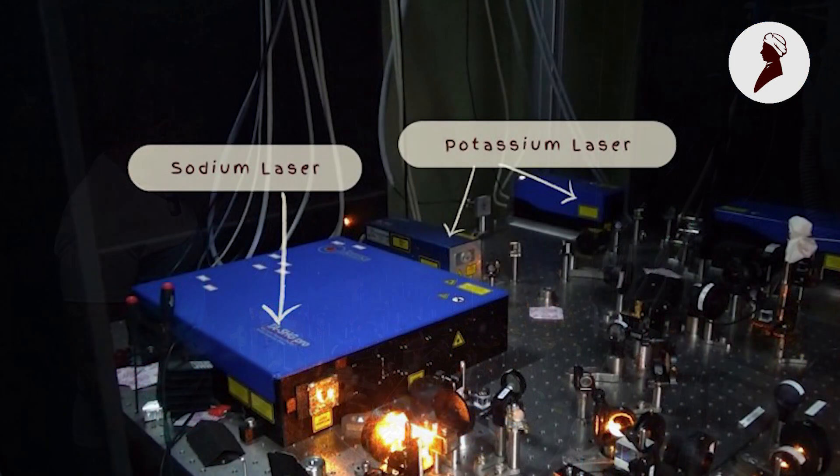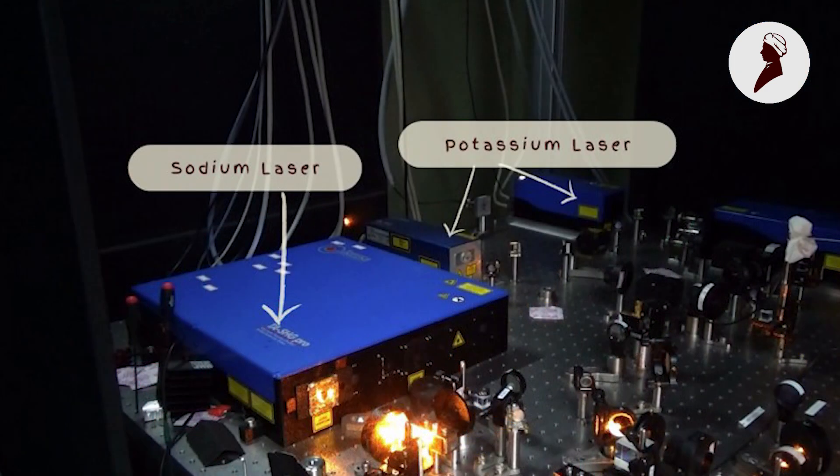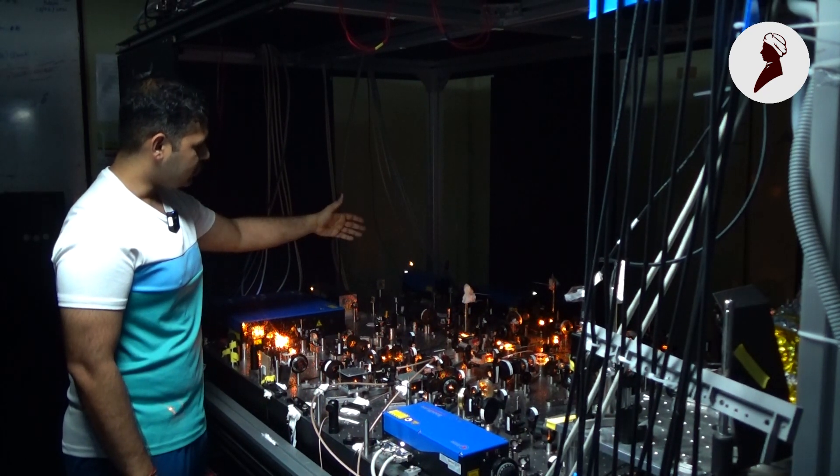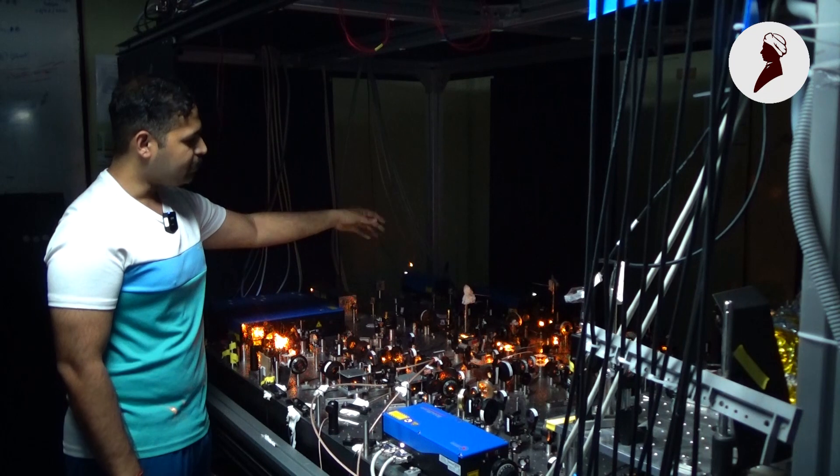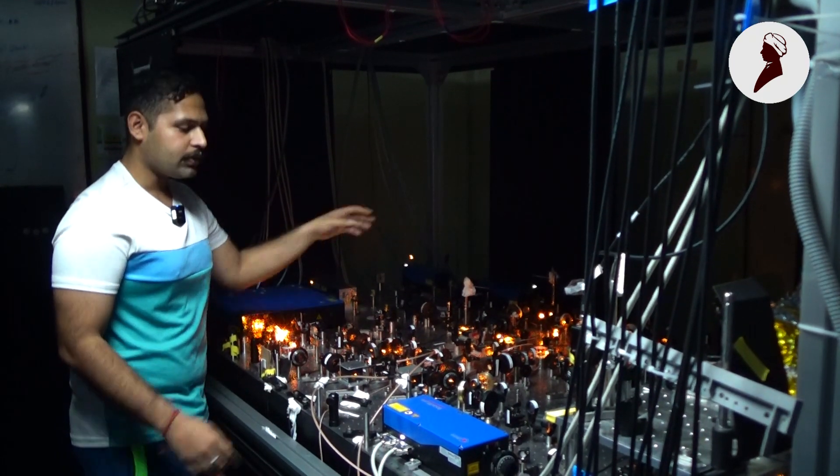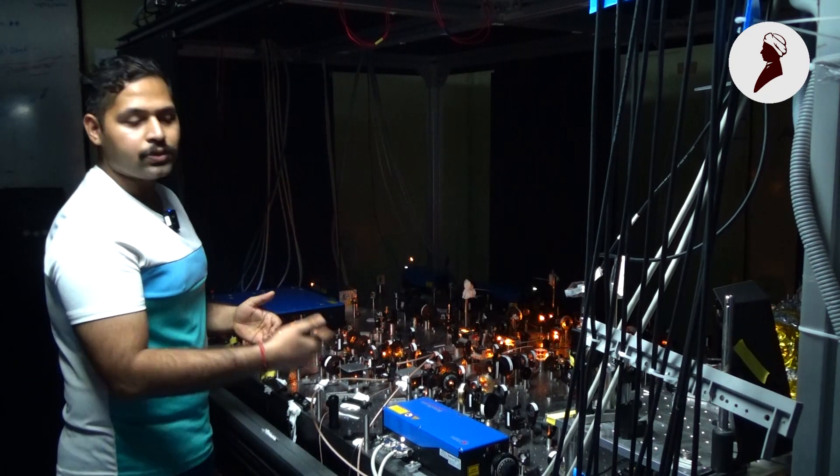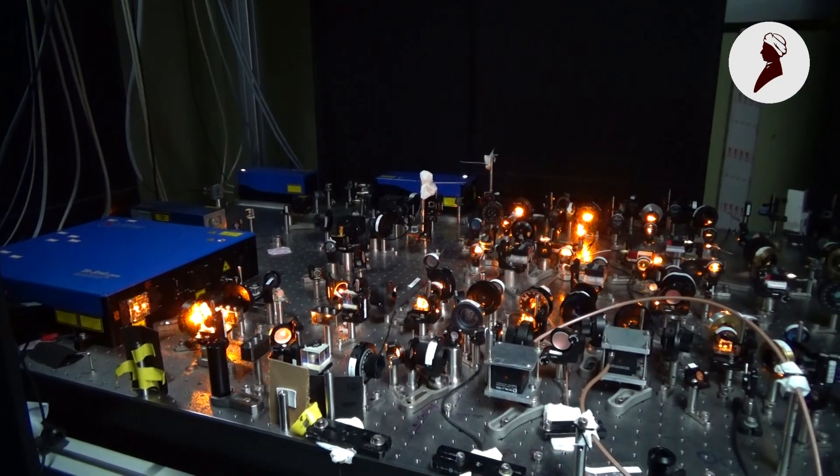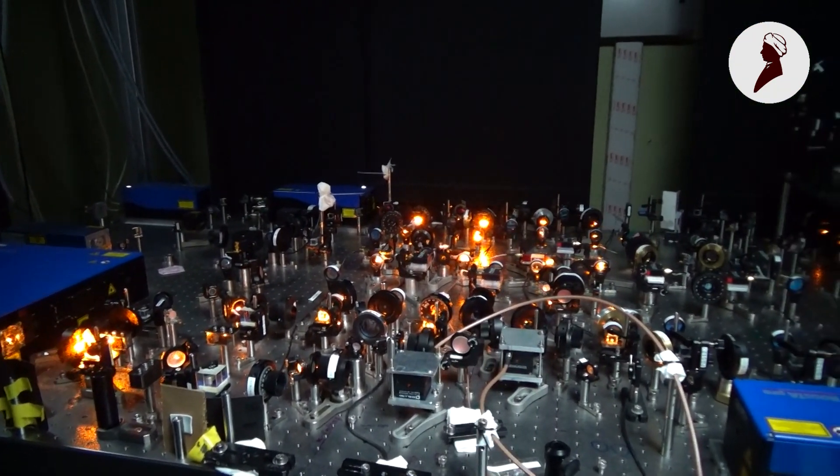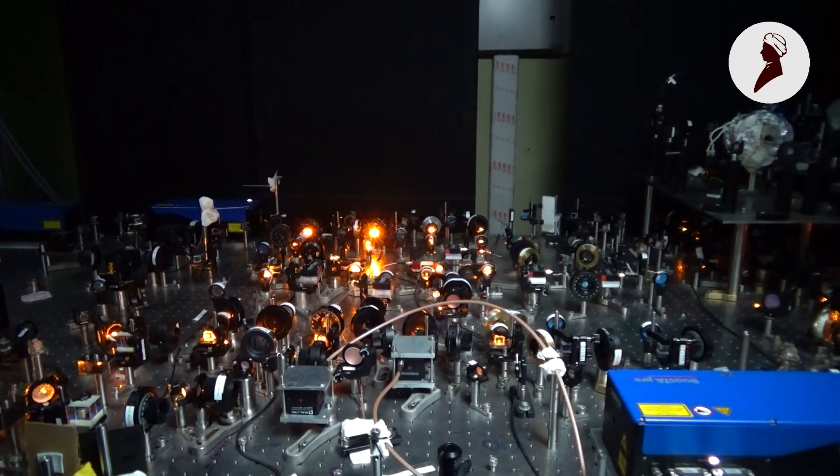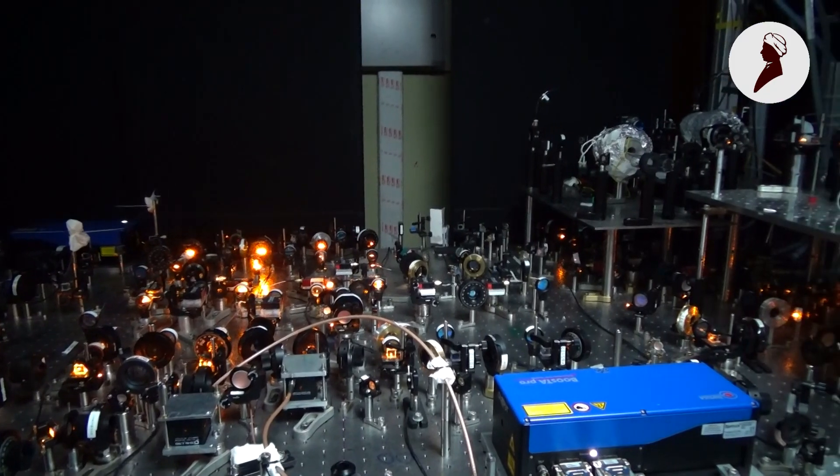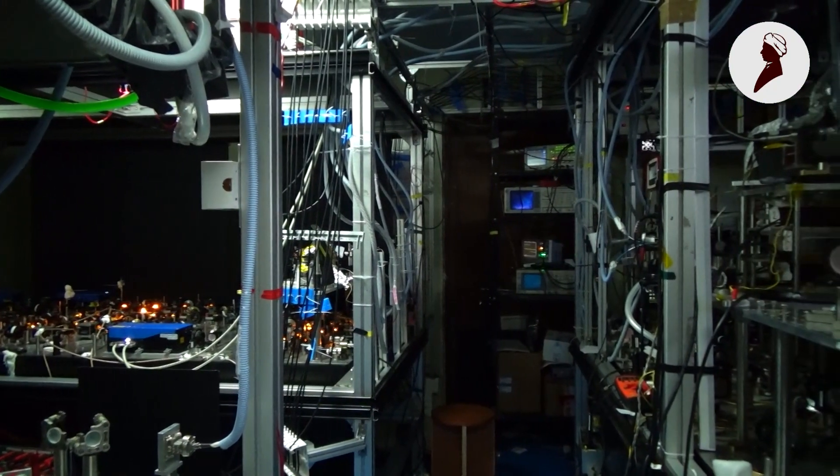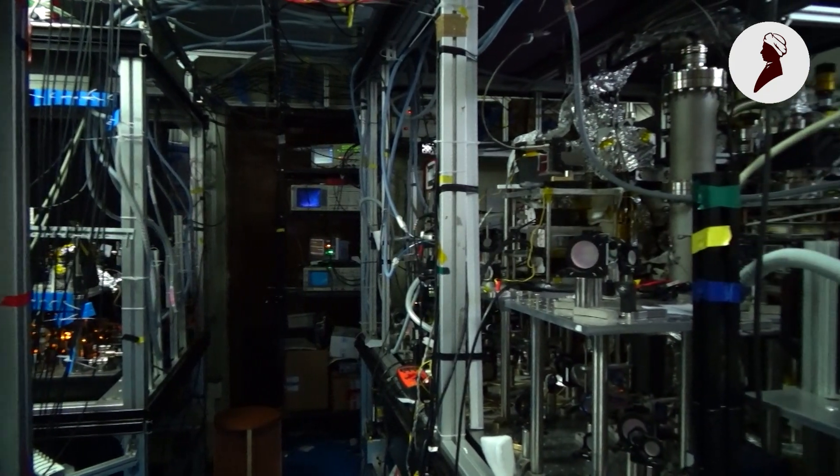The lasers that we use for the cooling and trapping of atoms, they are prepared on this table. So we use potassium lasers and sodium lasers, both are in ECDL configuration. After the laser output is taken from there, they are inserted in amplifiers, tapered amplifiers, one for the repump laser and one for the cooling laser. After they go through the amplifier, they give out 1.5 watts per each. And they are prepared by acoustic modulators to their particular frequencies that we would need for the experiment. And then by fiber coupling, we take the lasers from this table to that table. And then we do the laser cooling and trapping on that table.